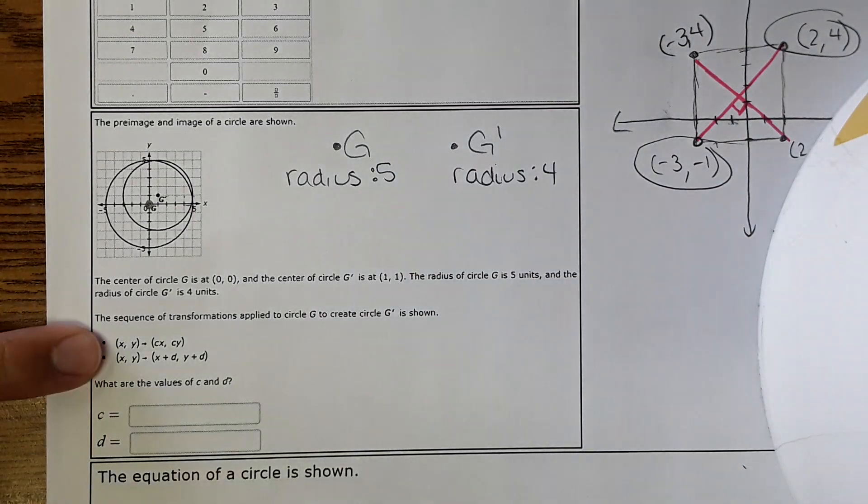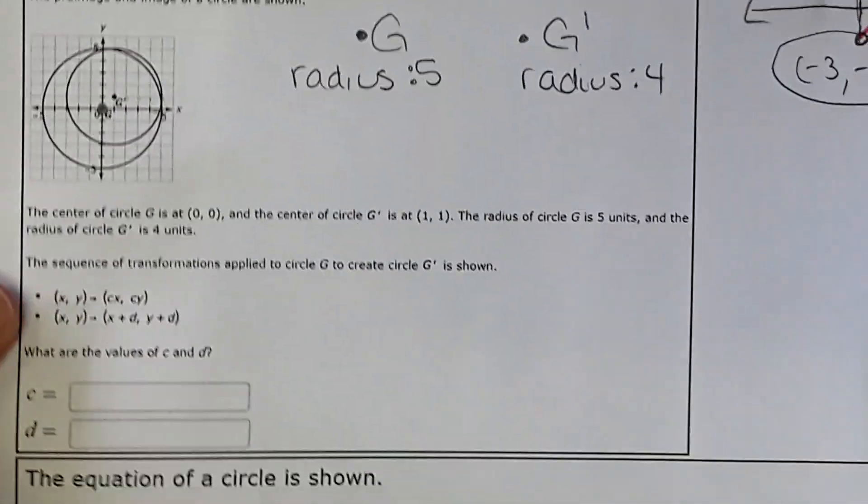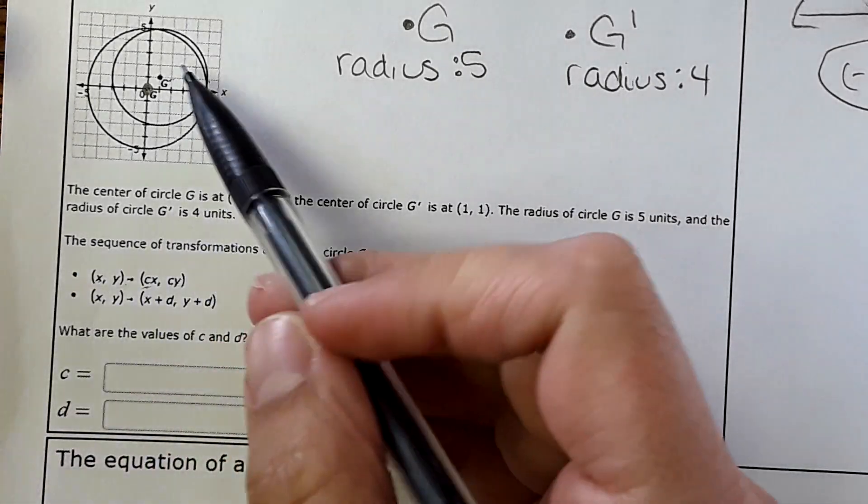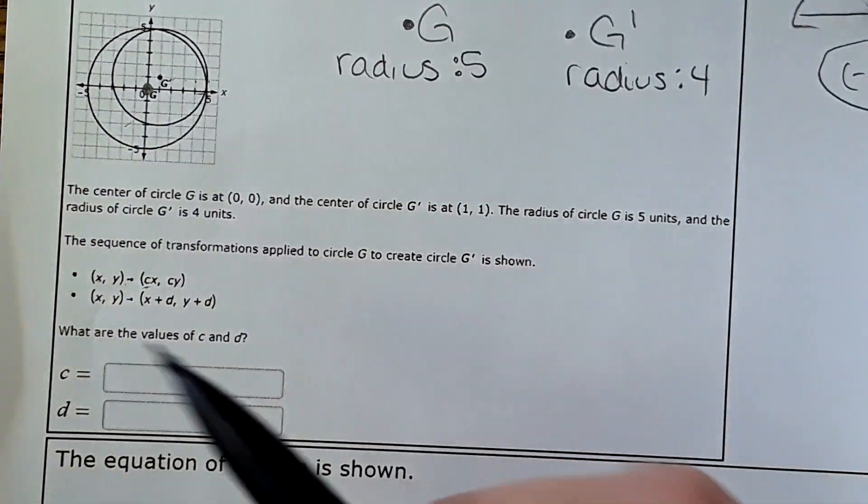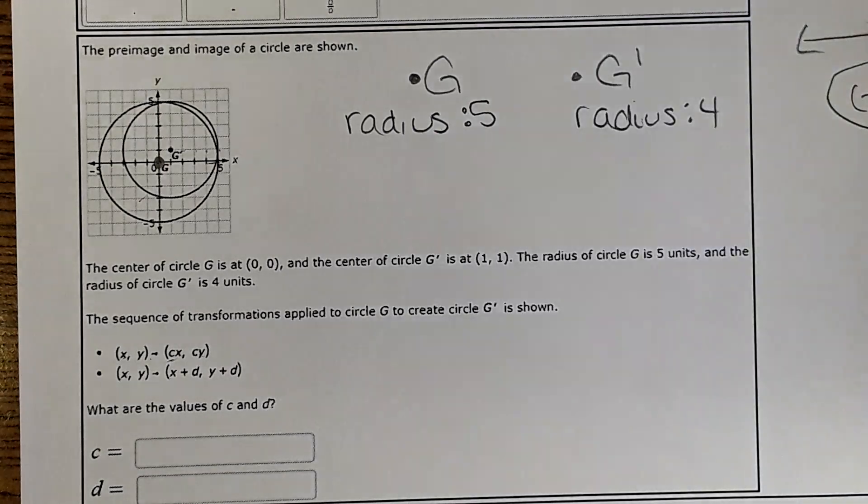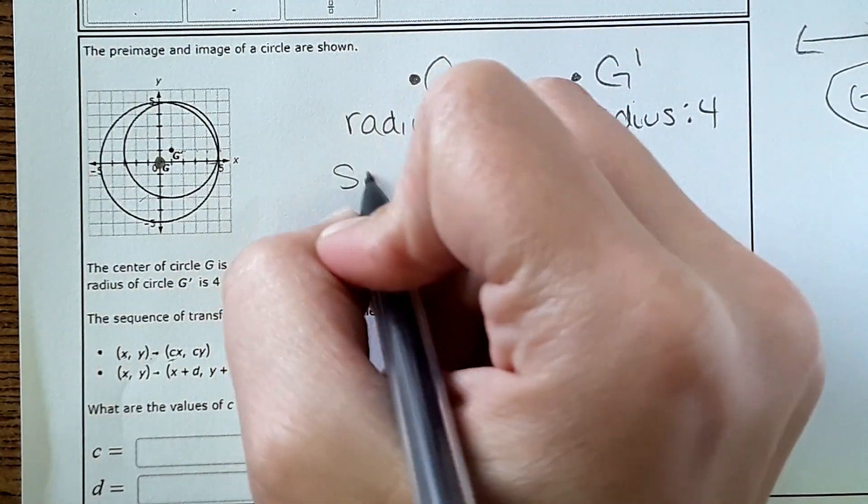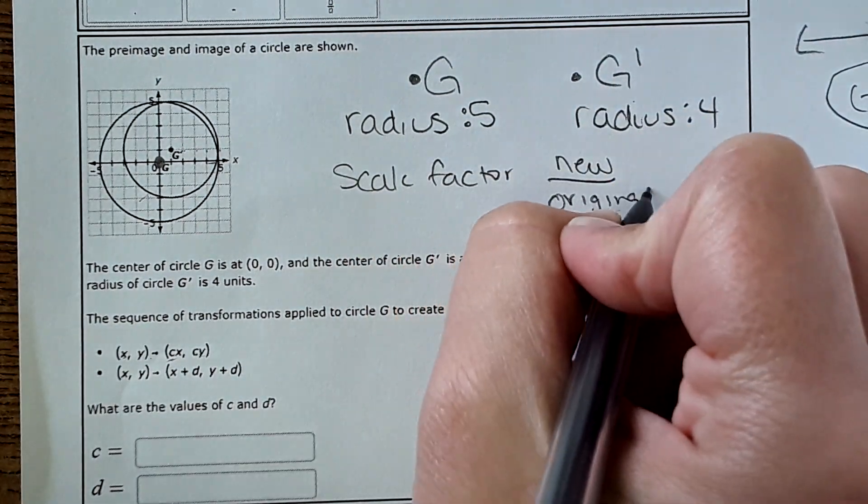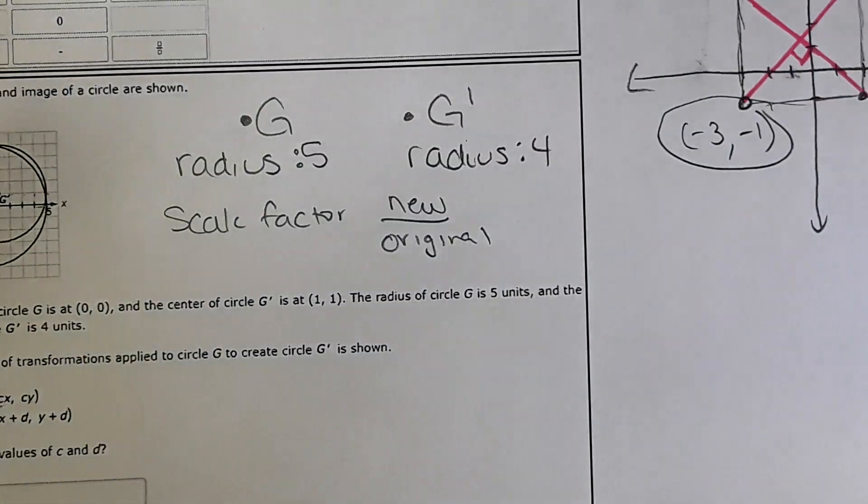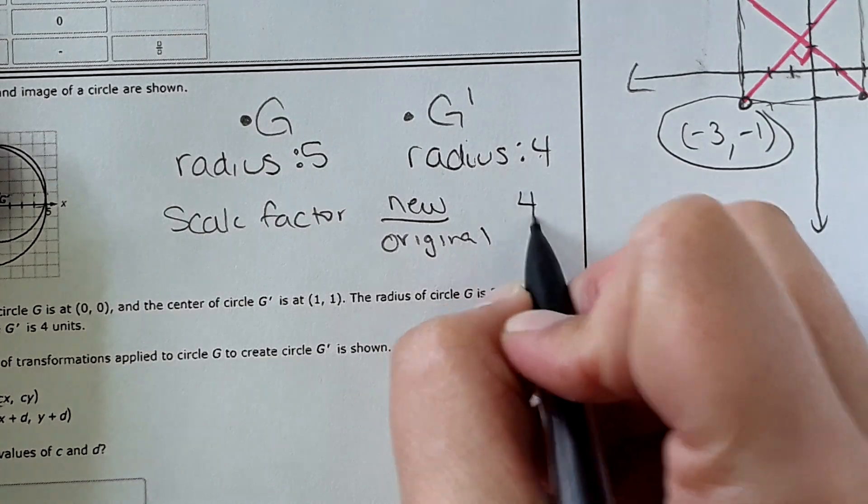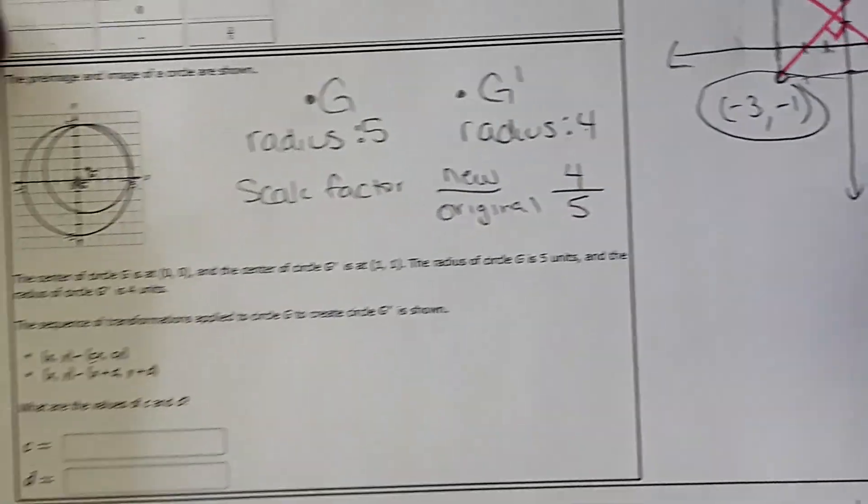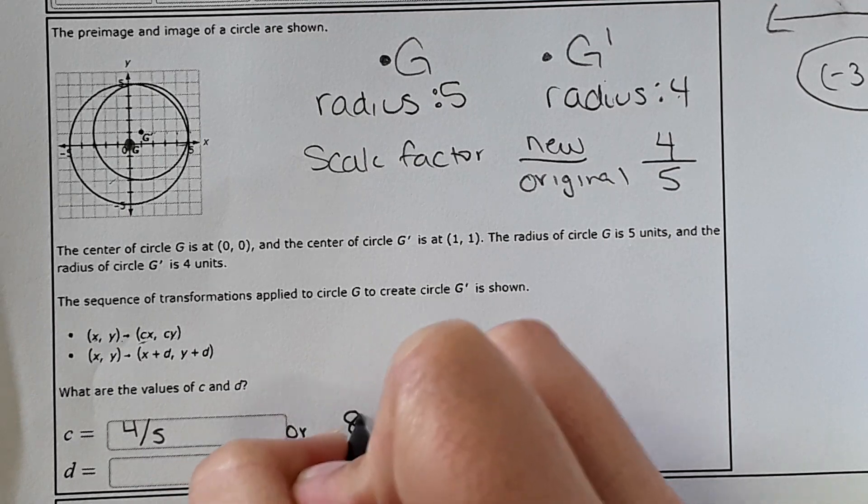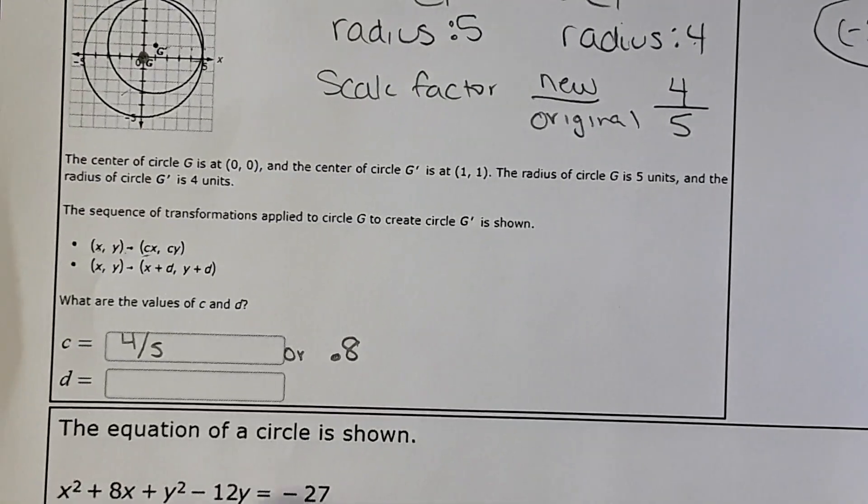So then it wants us to look at this transformation here and decide what C and D are. So C and D, C right here, they're multiplying by the X and the Y. So that would be a dilation. You can see it's getting smaller from one to the other. We need to know exactly what the dilation is or what the scale factor is. And for scale factor, remember, it is new over the original. So in this case, the new one would be 4 and the old one would be 5. So 4 fifths would be what you're multiplying the points by. Or you could put 0.8, however your brain works. Both would be correct.